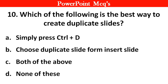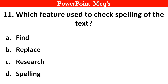Question no. 10: Which of the following is the best way to create a duplicate slide? The right answer is option C: Both of the above. Question no. 11: Which feature is used to check spellings of the text? Options: A. Find, B. Replace, C. Research, D. Spelling. The right answer is option D: Spelling.